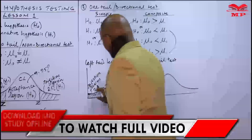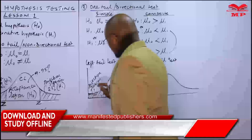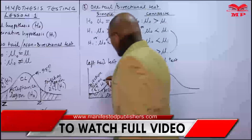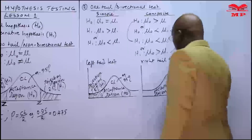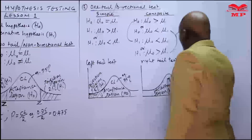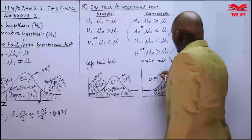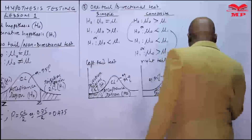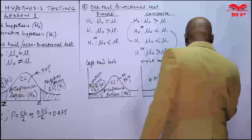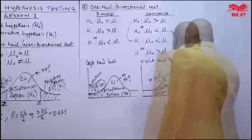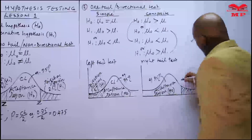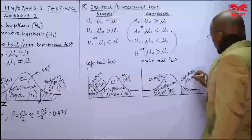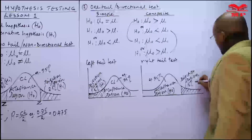The rejection region is 5% — the complete one side — which is the alternative hypothesis. Then the acceptance region is H0 at 95%. For the right tail test, the rejection region is on the right hand side at 5%, and this is H1.